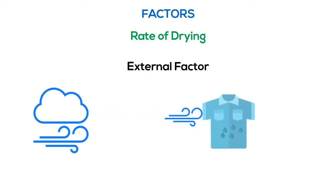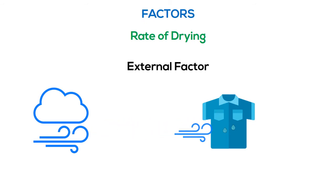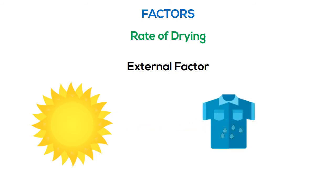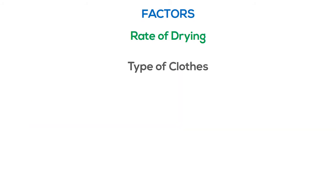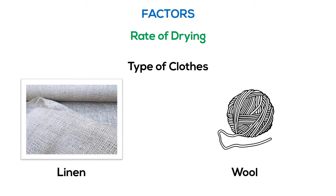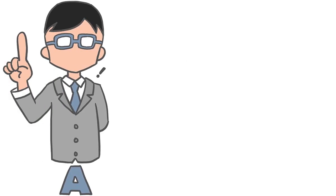External factors — this can be the wind flow that causes the air, which has collected some of the moisture from the material, to be displaced, so that fresh air can continue the drying process without getting saturated. Or the sun heat that provides thermal energy for the water molecules to begin to move, causing some of them to detach from the tissue and go into the atmosphere as vapor. The type of clothes also matters — clothes with more porous fibers such as linen favor the flow of water, while denser clothes such as wool make it difficult to evaporate.